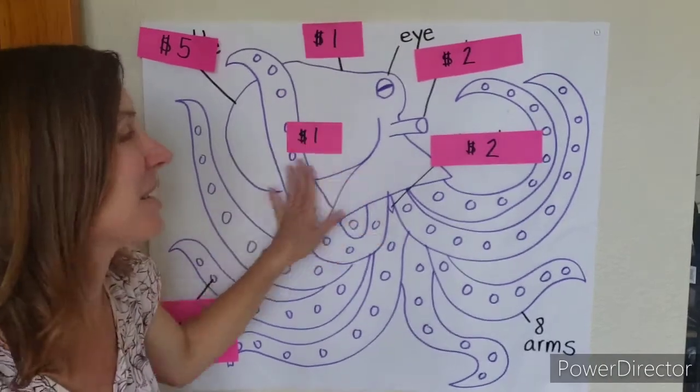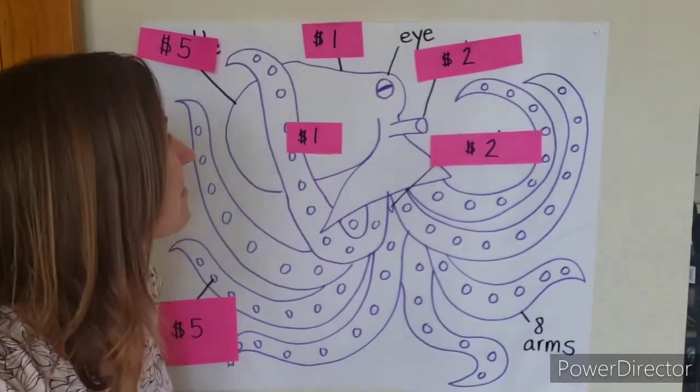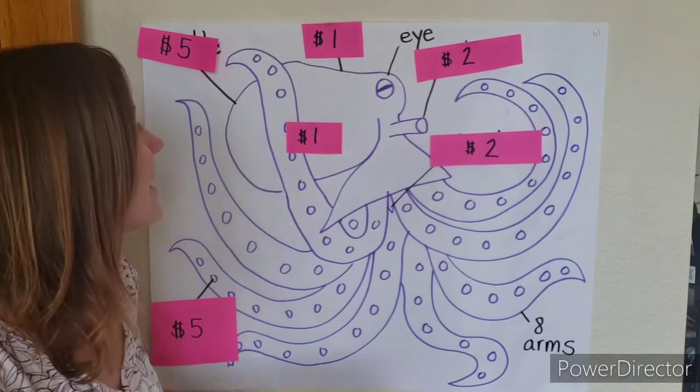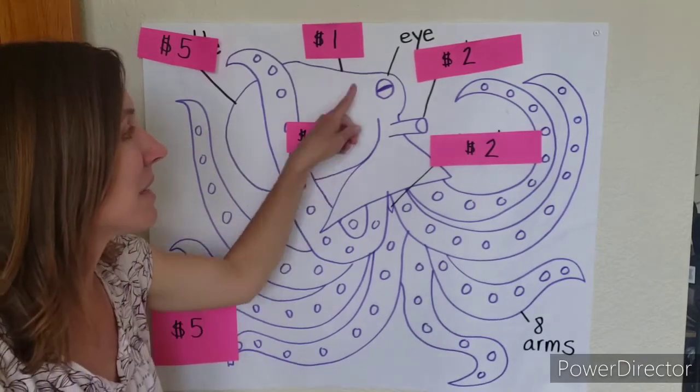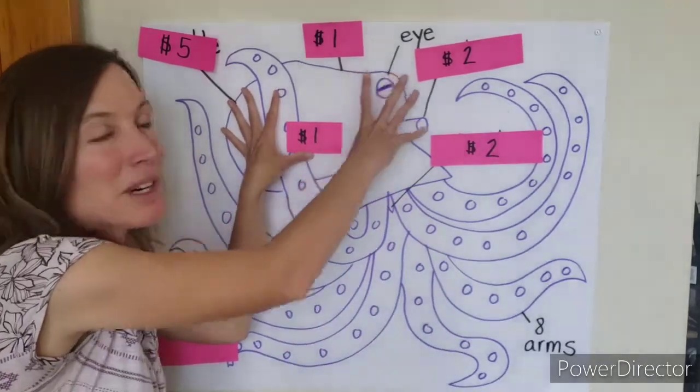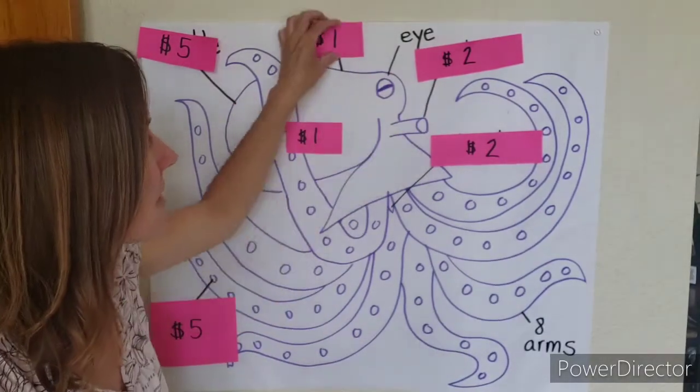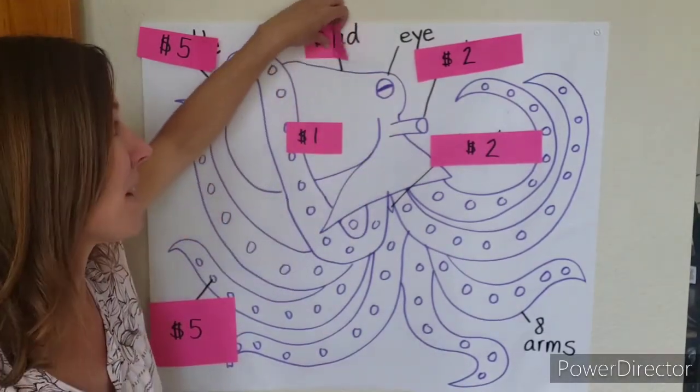What is this part called? Remember, there's kind of two sections to his body here. This front part here is called the head.